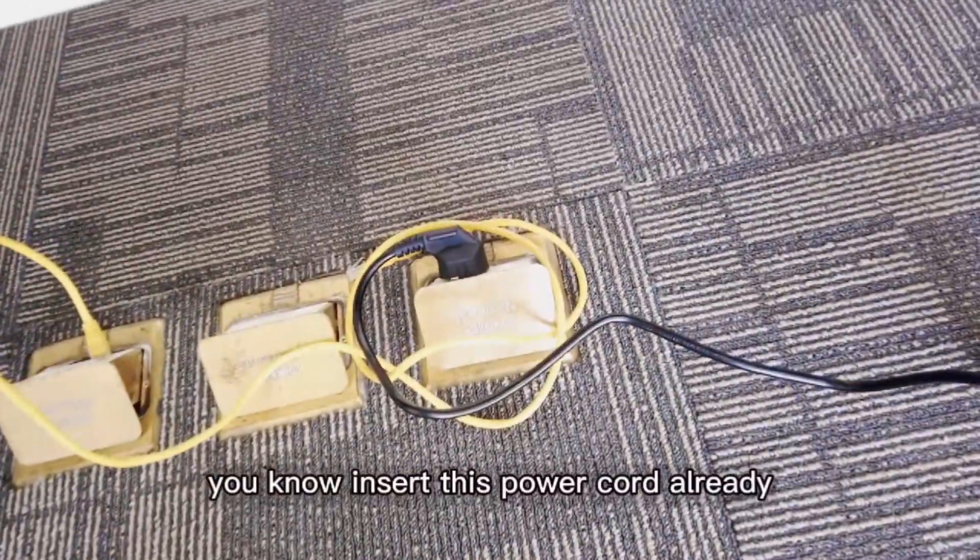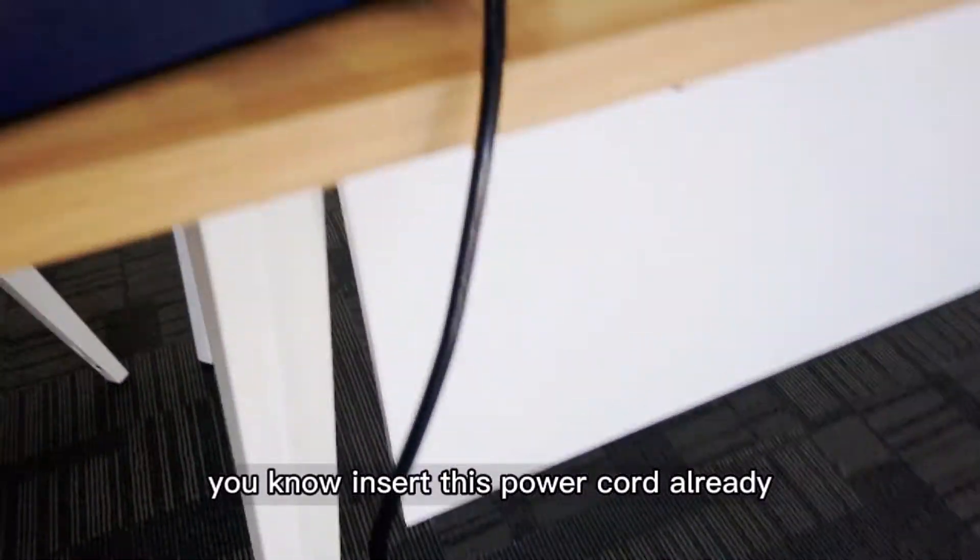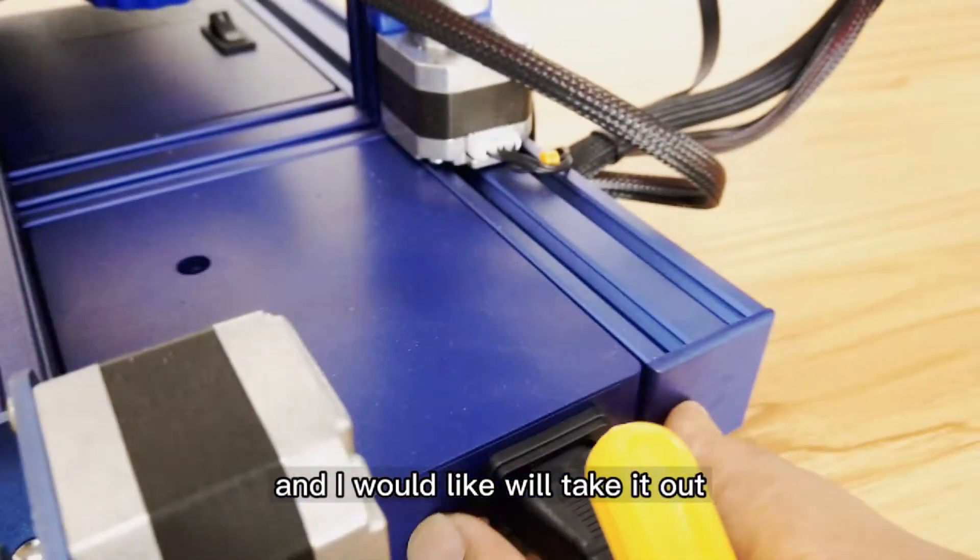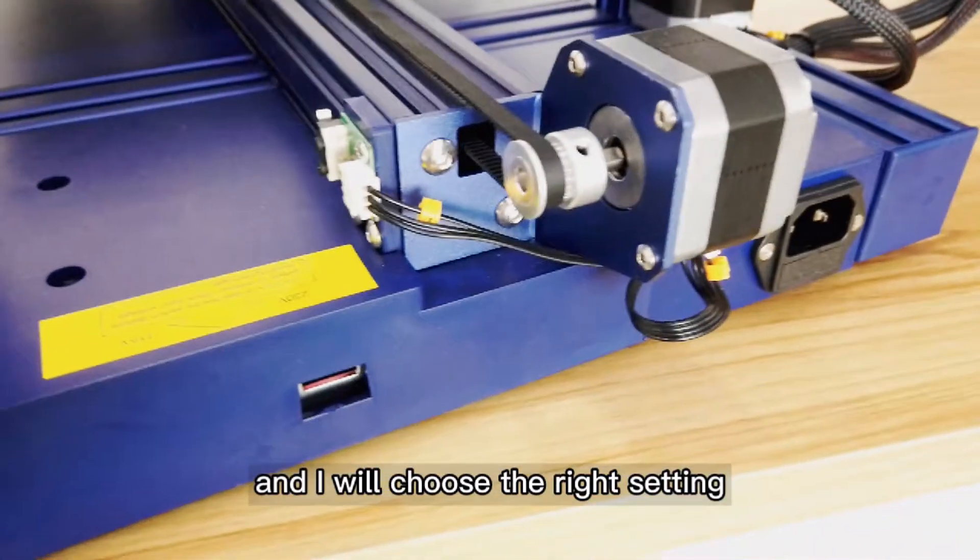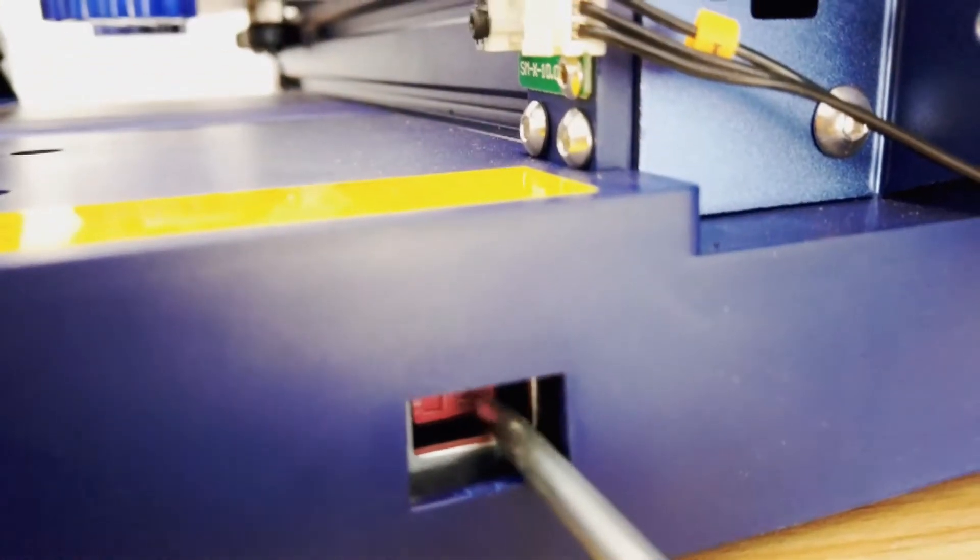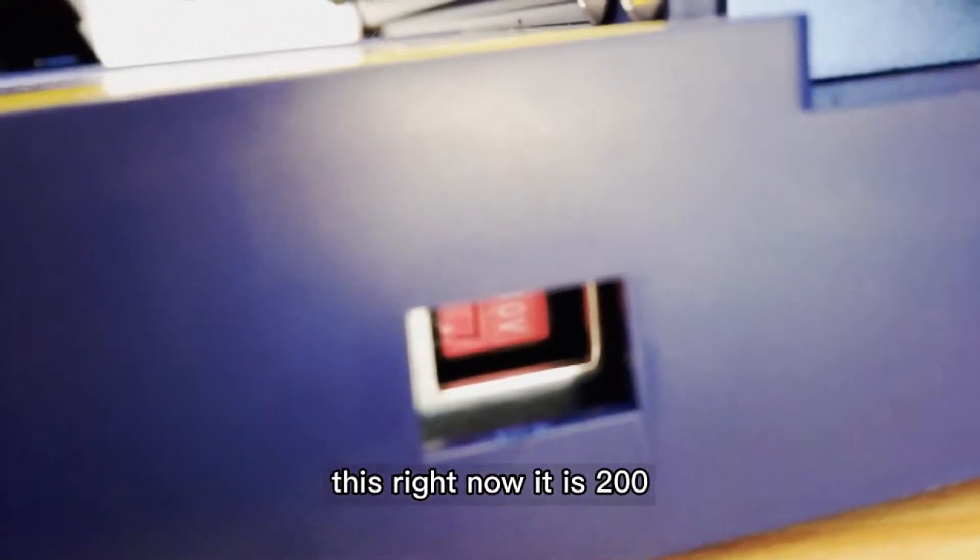For example, right now I've already inserted this power cord, and I will take it out and choose the right settings. This button looks like a slide, and right now it is 230 volts.